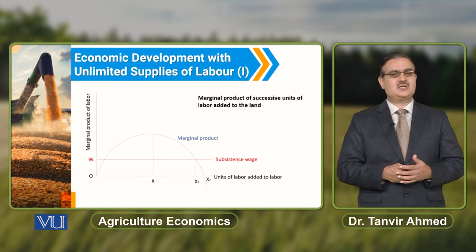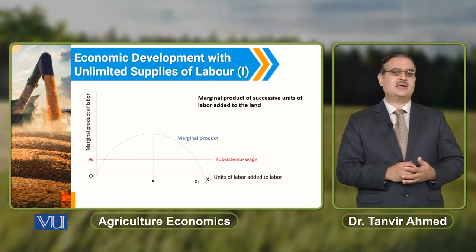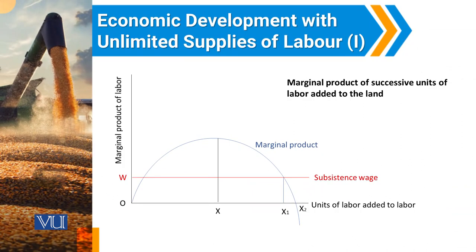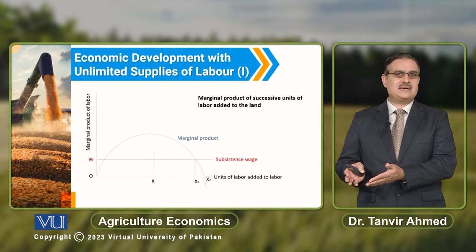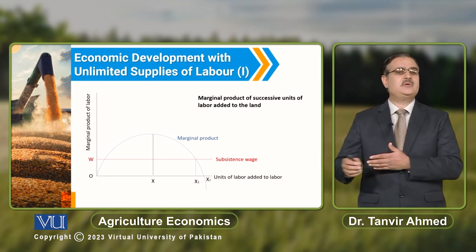Aur agar iske baad bhi aap labour add karo, there is further expansion in the units of labour in the subsistence sector, so yeh jo total output hai woh negatively impact hoga. Aur yeh jo labour hai that is added after x1 units of labour — that is labour surplus. Yeh jo labour surplus hai, it can be transformed to the industrial sector. In the subsistence sector, there is a surplus in labour if labour is employed after x1 units of labour, and in the capitalist sector, it can be used in the industrial sector.